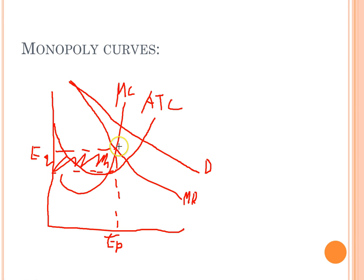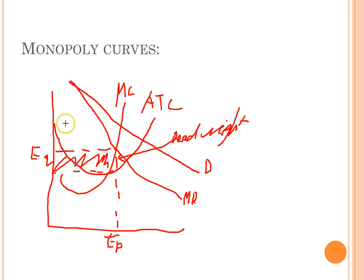There are a few more things to notice. There's going to be deadweight loss in this little triangle, because the monopoly doesn't produce at a point where price equals marginal cost — it produces above it. So there's deadweight loss; it's not efficient. And right here is your consumer surplus — this is someone who is willing to buy something for a higher amount but is only paying this much, and that difference is your consumer surplus.